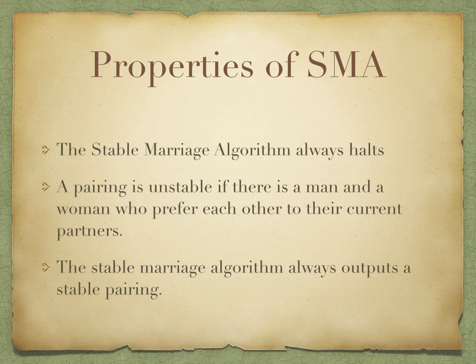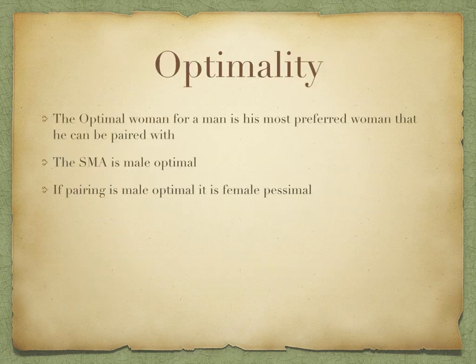A stable marriage algorithm will come to a halt and terminate with a stable pairing. There are some helpful properties of the stable marriage algorithm which are proved in the lecture notes, such as: the stable marriage algorithm always halts, and it always outputs a stable pairing. A pairing is unstable or rogue if there are a man and a woman who prefer each other to their current partners. Optimality is when one person is paired up with their most favorite person that is still within a stable pairing range. Pessimal is the reverse, where it is their least favorite person, but a stable pairing still exists for the pairing.